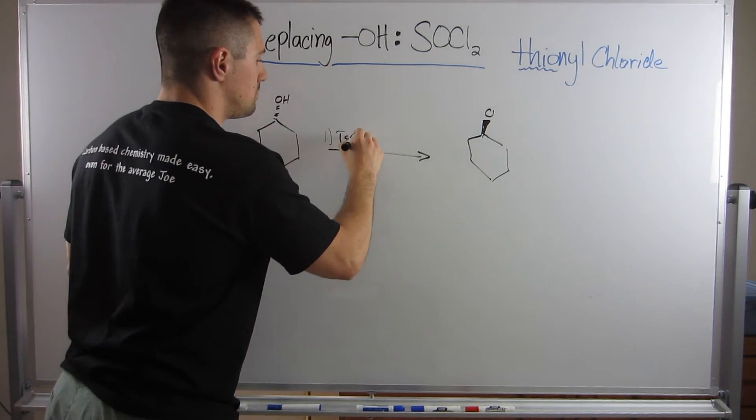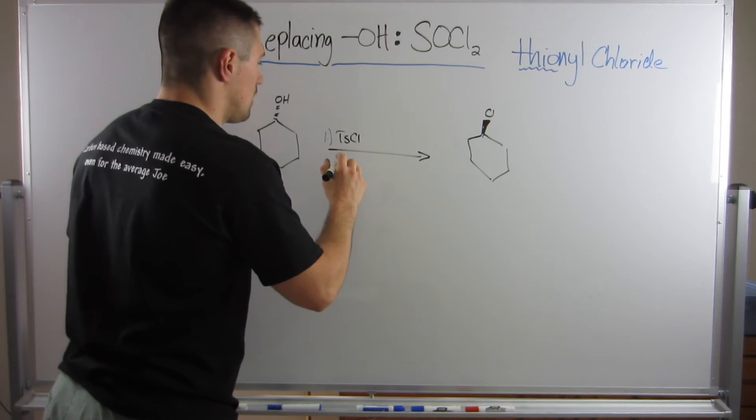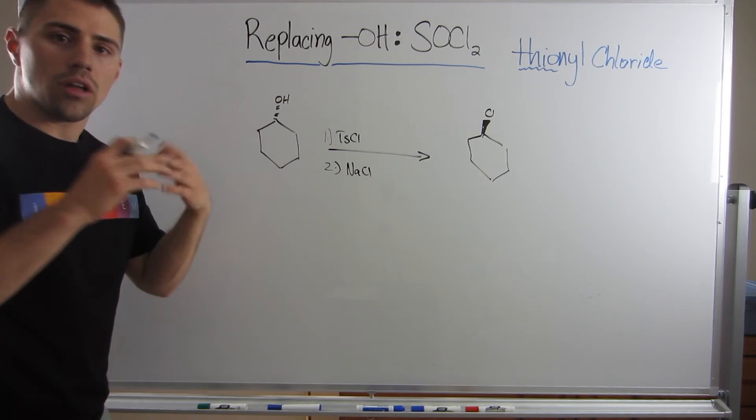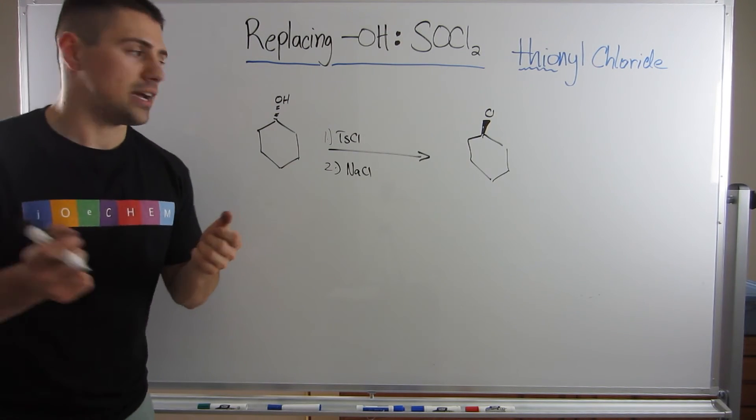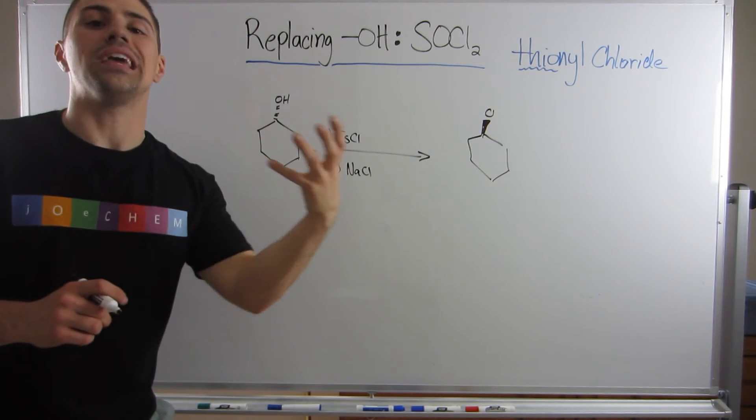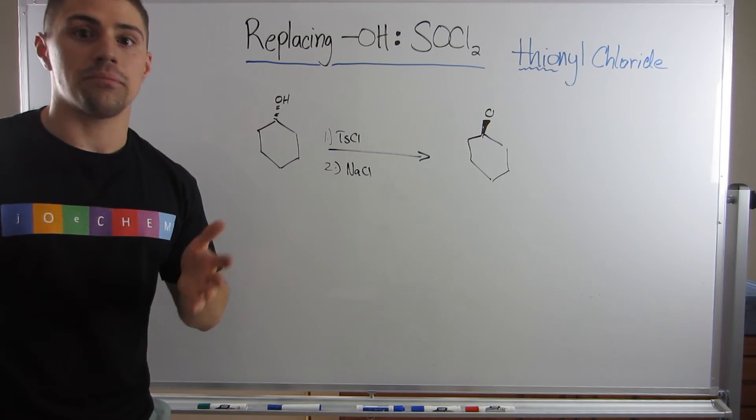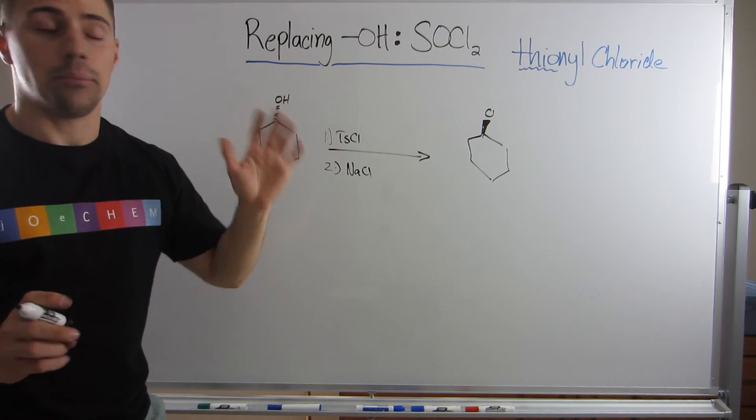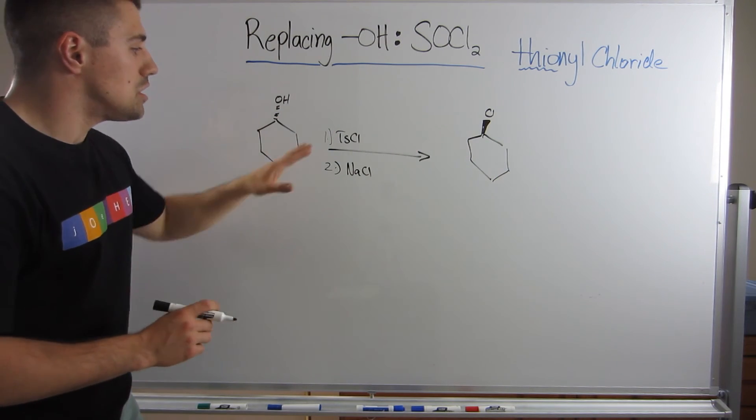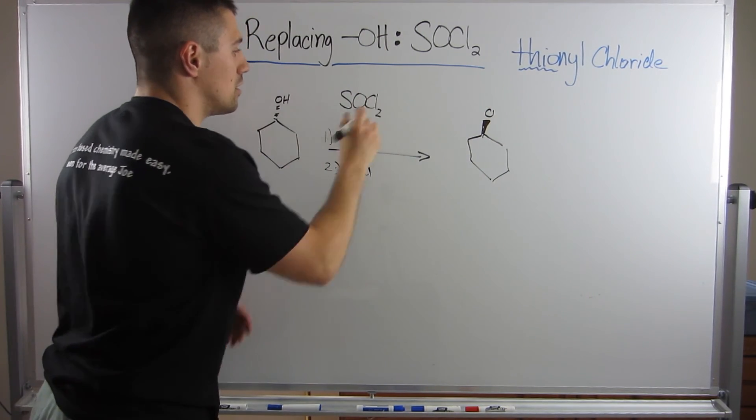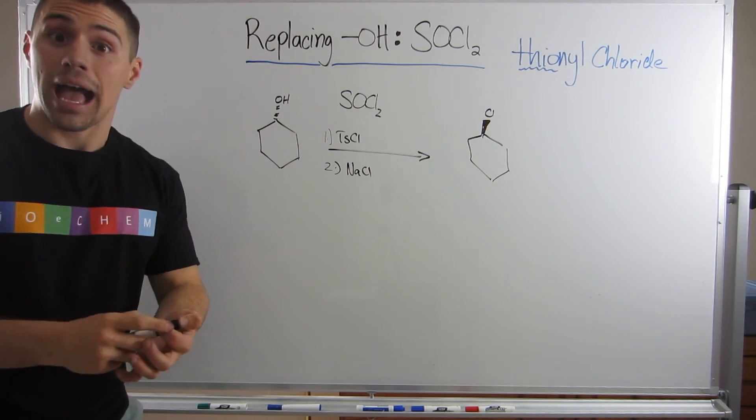In the world of real chemistry, right, if you can do something in fewer steps, your yield will be higher, right? And I know that doesn't matter for people that aren't going to go on to be professional chemists or get a PhD. But if you can do this in one step with one step of SOCl2, your yield is actually better. And that's something that actually matters.